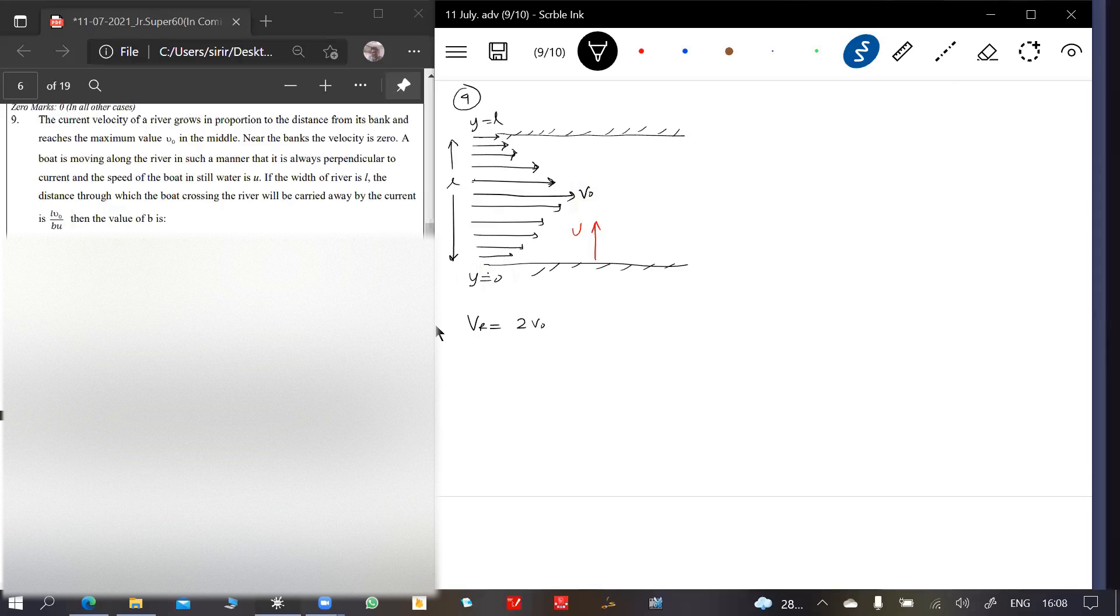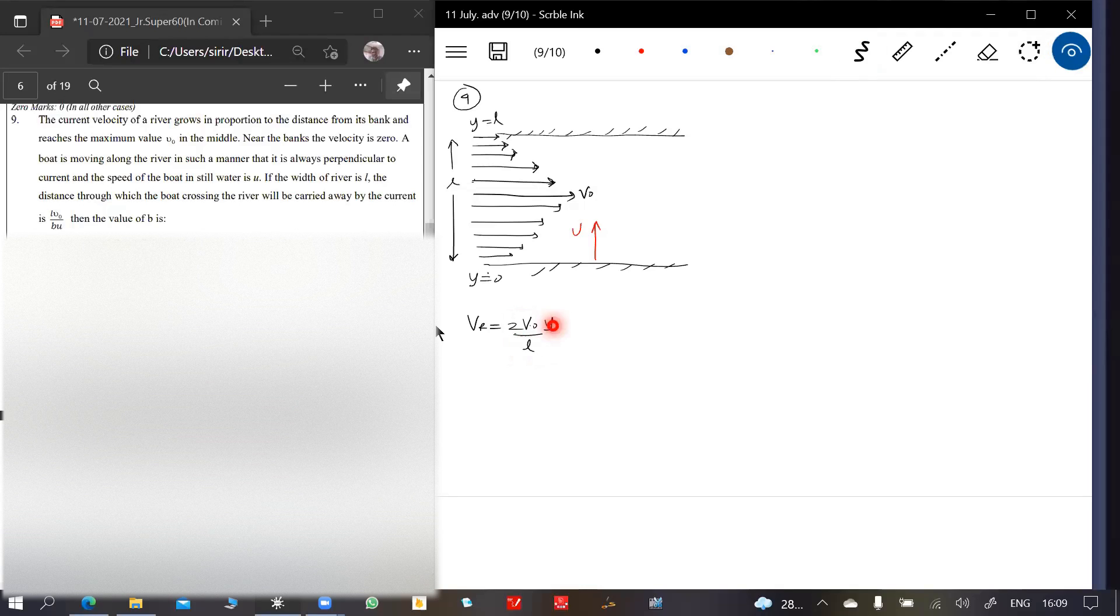Shall we write this is 2V0? Try to make a guess of this one. If I put Y equal to L by 2, it should be V0. Put Y equal to L by 2, it should be V0. Put Y equal to L, it should be again 0.